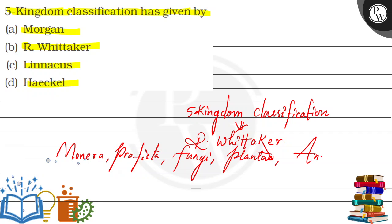R.H. Whittaker has given us the Five Kingdom Classification — not Morgan, not Linnaeus, not Haeckel. So option B is our correct answer. R.H. Whittaker has given the Five Kingdoms Classification.